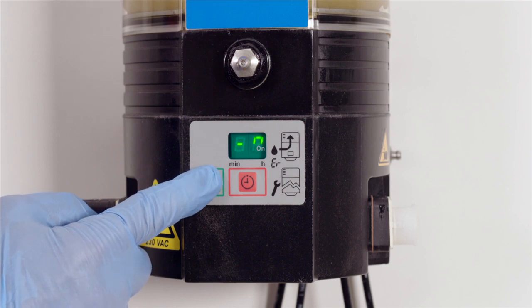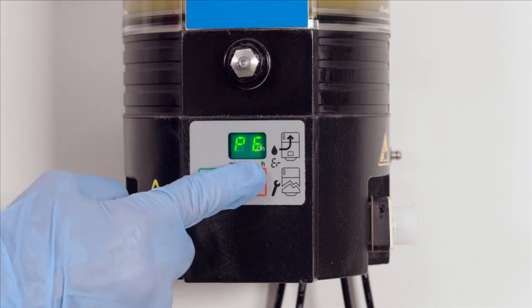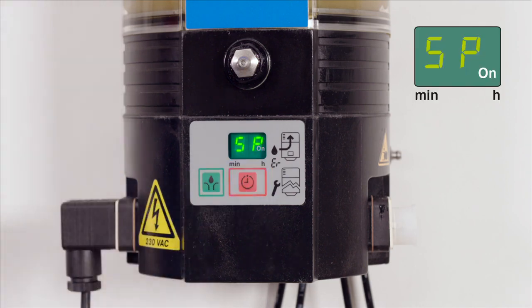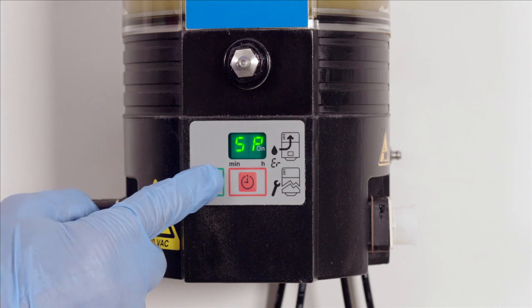P6 is now displayed. P6 defines how the pump will start when it is switched on, either with a pause time, SP setting, or a lubrication cycle, SO setting. Select and confirm.